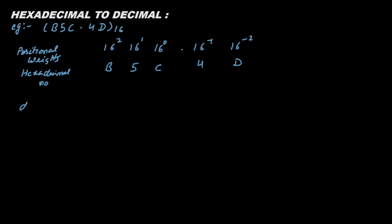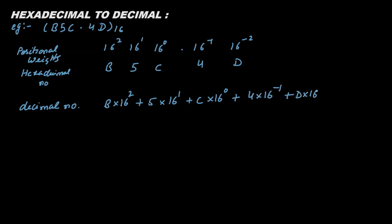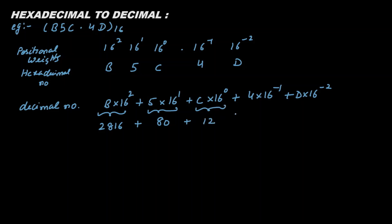The next step is to get the decimal number. Multiplying each digit by its positional weight: B (which is 11) times 256 (16 squared) gives 2816. Then the next terms give 80, then 12, then 0.25, and then 0.0078.